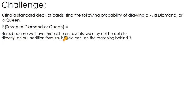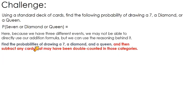Here we have three different events. We're not really able to use our addition formula directly, but we can still use the reasoning behind it. I'm going to find the probability of drawing a 7, then a diamond, then a queen — but then subtract any cards that got double counted. It's the same reasoning behind the addition formula without using the formal version.